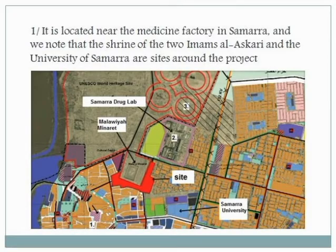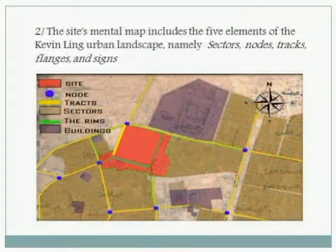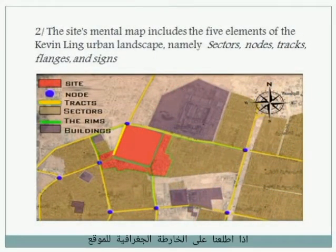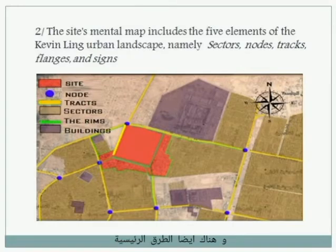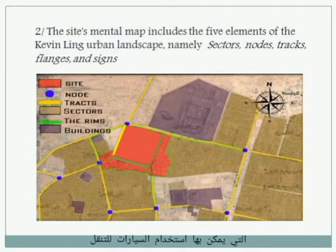If we look at the map, it includes five known elements: sectors, nodes, tracks, and others, according to the urban landscape. Also, access to the main roads travelled by cars to the project.